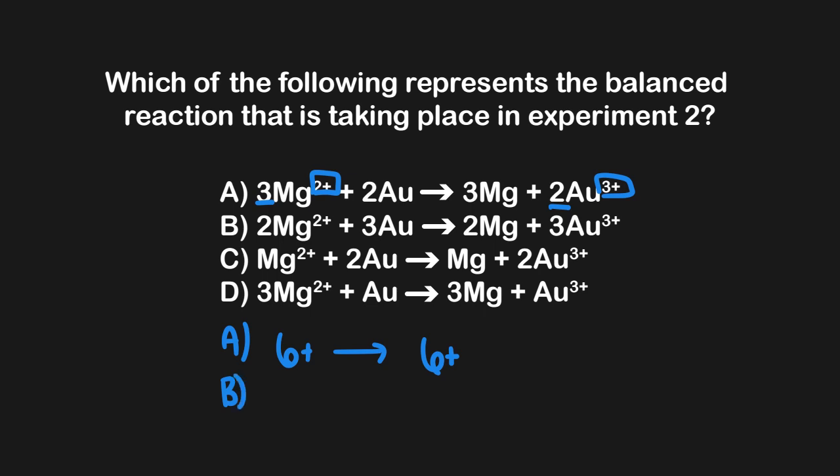Let's move on to B now. For B, we have 2Mg2+. So that's 4+, on this side. And then when we come over to this other side, we have 3Au3+. That would be 9+. So already, we can get rid of B as an answer since it isn't balanced. Now let's move on to C. For C here, we have Mg2+. We only have 2+, on this side, since nothing else is charged. And then when we come to this other side, we have 2, 3+, for the Au. So that would be 6+. So that also doesn't reconcile in terms of its charges. So C is out as a correct answer.